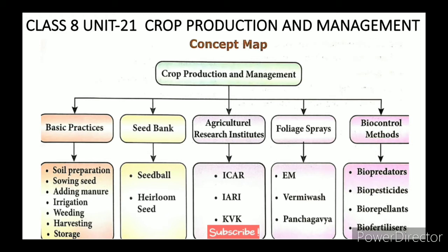The fifth topic is bioindicator — lichens. The sixth topic is agricultural research institutions. IARI stands for Indian Agricultural Research Institute. ICAR stands for Indian Council of Agriculture Research. ICAR operates under the Central Government and the Agriculture Ministry. ICAR conducts research, and ICAR and farmers are linked through KVK — Krishi Vigyan Kendra.